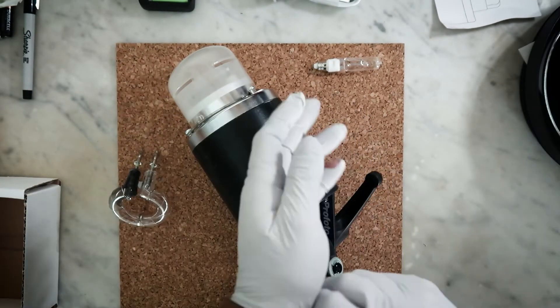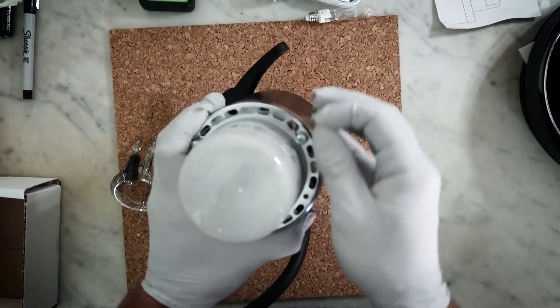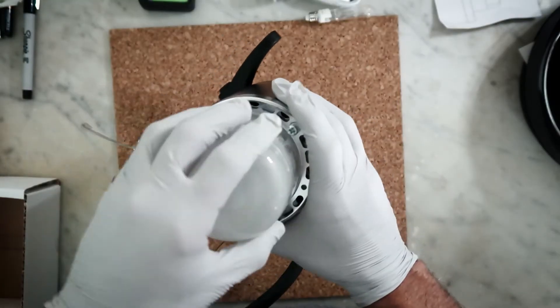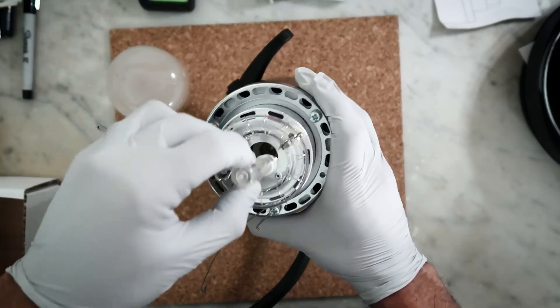Set it down and then realize you forgot to put your modeling lamp back in. Take those spring clips off, pull that glass cover off and put your modeling lamp back in the light.